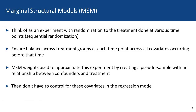To understand marginal structural models, let's first think of a randomized experiment where there are multiple time points at which a person can be randomized to treatment. At each time point, there are covariates we want to control for that may influence differences between the treatment and control group. By randomizing treatment at each time point, we ensure balance between the groups. Now, what happens when we can't randomize? Marginal structural models use weighting to approximate this experiment — at each time point, creating a pseudo-sample where there's no relationship between confounders and treatment, so you don't have to control for these covariates in the regression model.